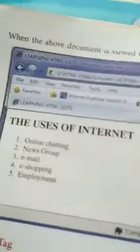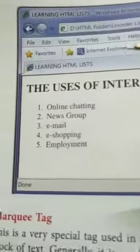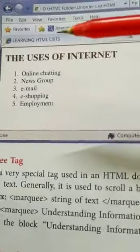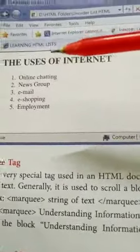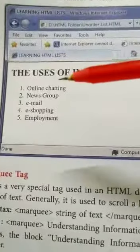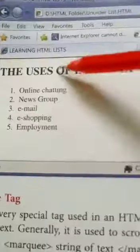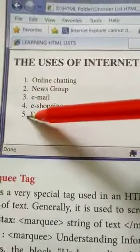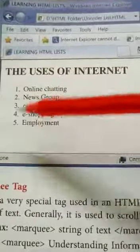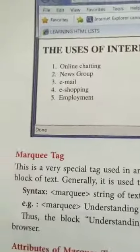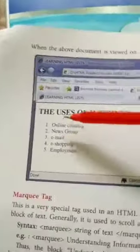Let us see the output. The same content - instead of 'ul' you write the command 'ol', that is ordered list. See, instead of bullets, one, two, three has come - by default it gives numbering. If you want letters instead, you have to specify that.